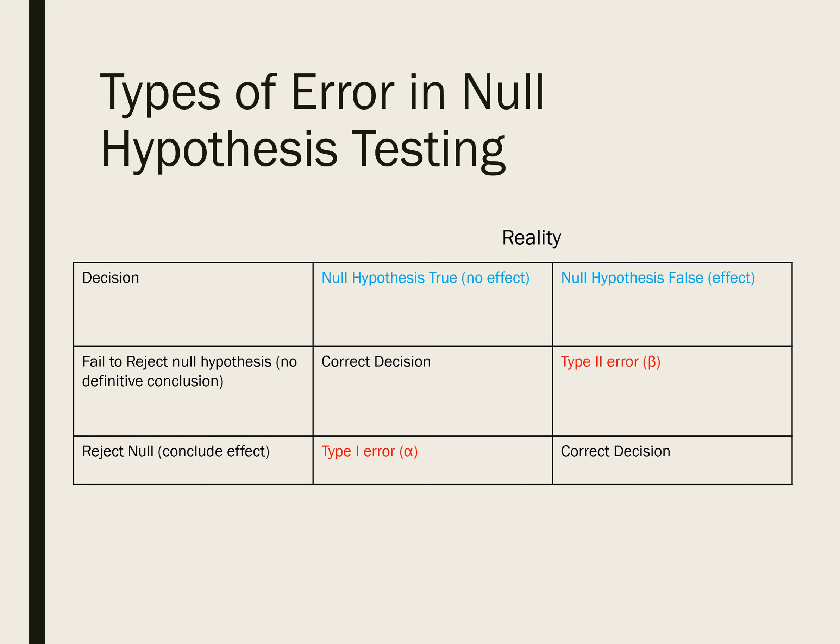The other type of error is called a Type 2 error, or beta error. This occurs when the null hypothesis is false — so it should be rejected — but our data indicated that we should not reject it. That failure to reject a false null hypothesis is called a Type 2 error.